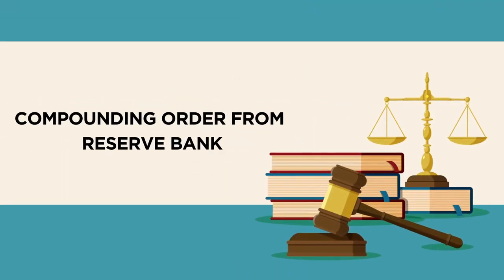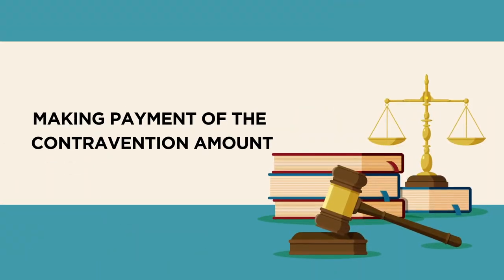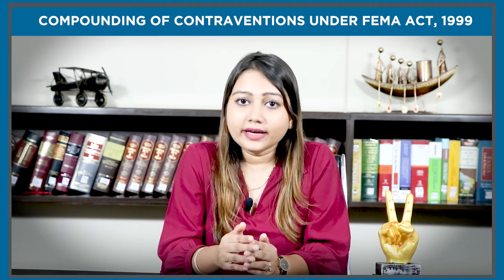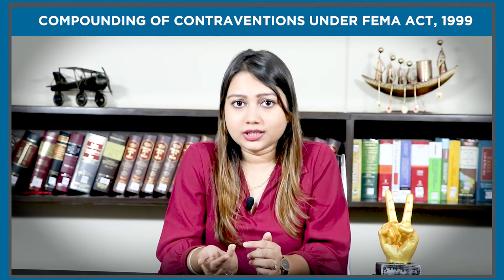Compounding order from the Reserve Bank: the Reserve Bank shall issue the order of compounding within 180 days from the date of application, as well as other documents and submissions made in the context of personal hearings. The sum for which the contravention is compounded should be paid through demand draft in favor of RBI within 15 days of the date of the compounding order. The manner in which the demand draft should be drawn and deposited will be indicated in the order of compounding.